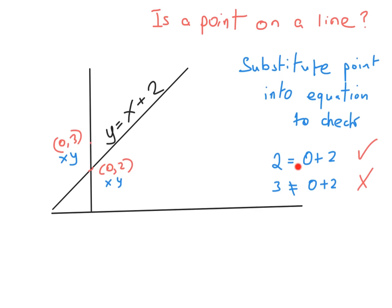Here you see that 2 does in fact equal 0 plus 2, which means the point is on the line. Whereas if you substitute the other x and y values into the equation, you get 3, which does not equal 0 plus 2. So in that case, we can say it's definitely not on the line.